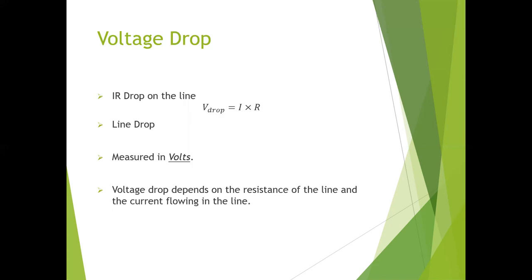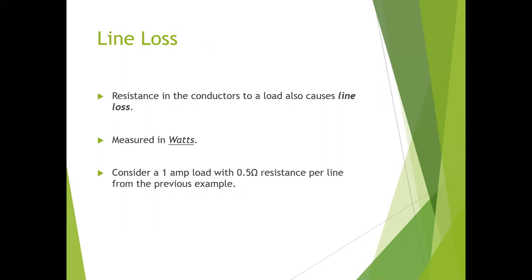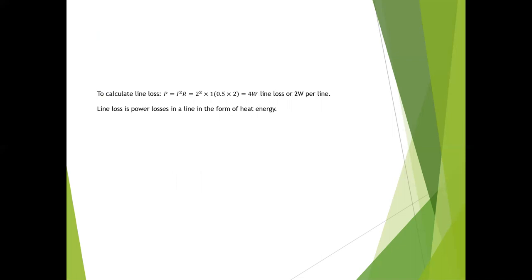We've got our volt drop and that equals I times R. We also call this line drop. Don't confuse that with line loss because some questions will ask you what is the line drop for this resistor or load, and you have to make sure you are not calculating line loss. It is measured in volts and indeed does depend on the resistance of line and current flowing through it. If we consider that previous example with the 0.5 ohm resistance per line, we can actually calculate the line loss using our I squared R formula. We have 4 watts total of line loss or 2 watts per line, and these losses are going to be in the form of heat.